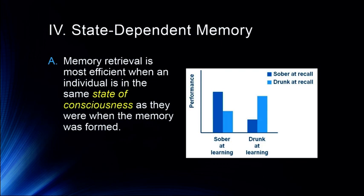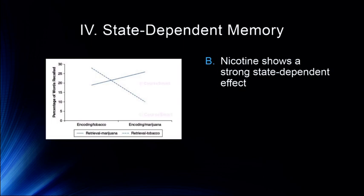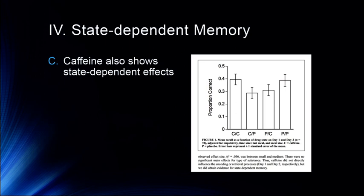Nicotine is another drug that shows a strong state-dependent effect, particularly when comparing to marijuana. If you smoke tobacco at encoding, performance is very high; it's very low when you encode tobacco and retrieve with marijuana. Encoding tobacco, retrieval tobacco is the highest memory performance. Caffeine also shows a strong state-dependent effect. Performance is highest when we match caffeine at encoding and retrieval, or no caffeine at encoding and retrieval. So if you like coffee when you study, bring some coffee to that exam.